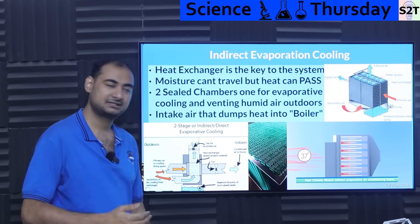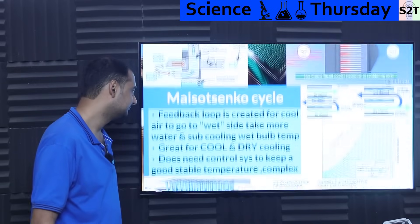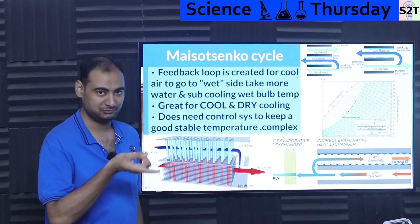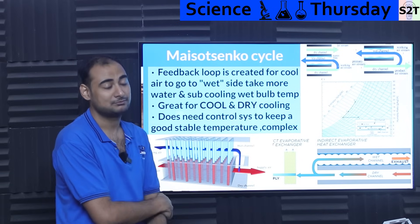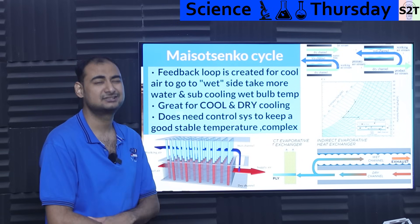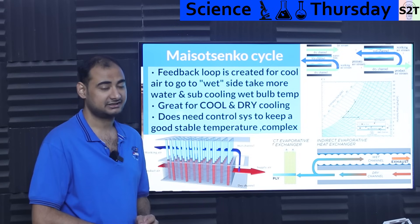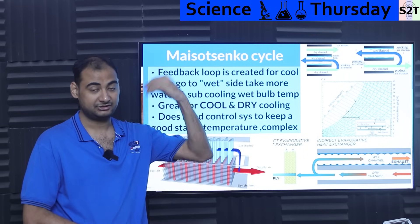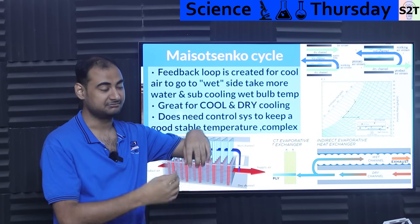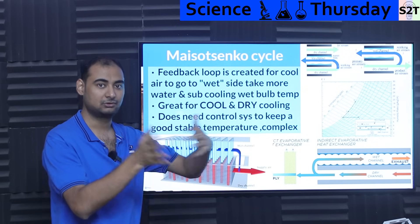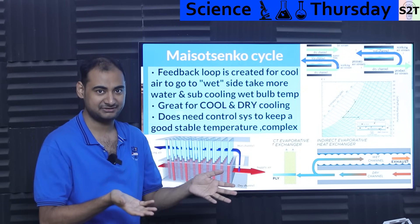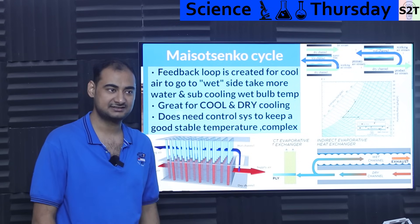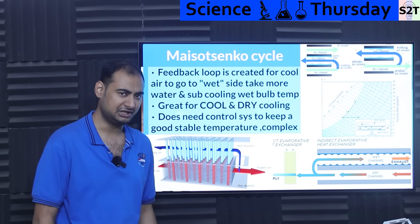Then we go to the M-cycle. Somebody figured out: what if we have a feedback loop? It's not popular in every design and it is messy, but if done correctly it can go below the wet bulb temperature. The wet bulb temperature is the limit you get by putting a wet cloth on a thermometer and blowing air through it — this system can go below that. If the wet bulb temperature is 22°C, this can drop it to 18°C.